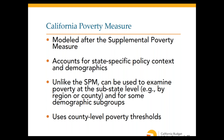A particularly important feature of the California Poverty Measure is that it is built on a different dataset, which means it can be used to look at poverty at the sub-state level — at the level of regions or counties — and for smaller demographic subgroups. This extends the positive features of the SPM to smaller geographic areas within California. The CPM also uses county-level poverty thresholds instead of metropolitan area thresholds, making them more specific to smaller areas.